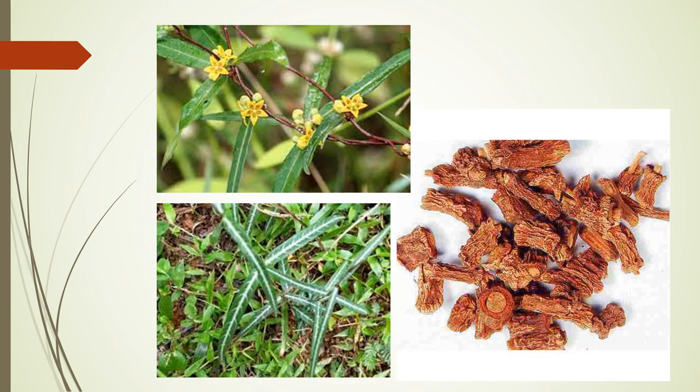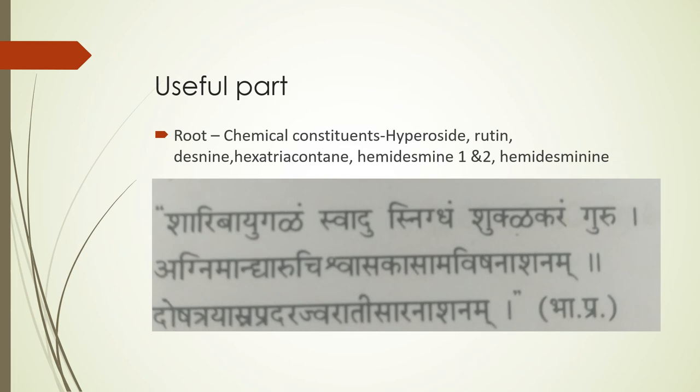In the picture you can see mainly the tuberous roots, which are used for medicinal purposes. You can also see the leaves and flowers. The useful part is root. Chemical constituents of the root include hyprocyte, rutin, desnin, hexatriacontine, hemidesmin 1 and 2, and hemidesminin.